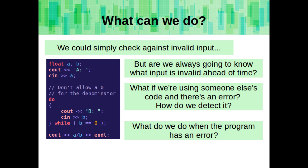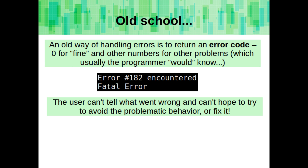We could simply check against invalid input, but are we always going to know what input is invalid ahead of time? What if we're using someone else's code and there's an error? How do we detect it? What do we do when the program has an error?